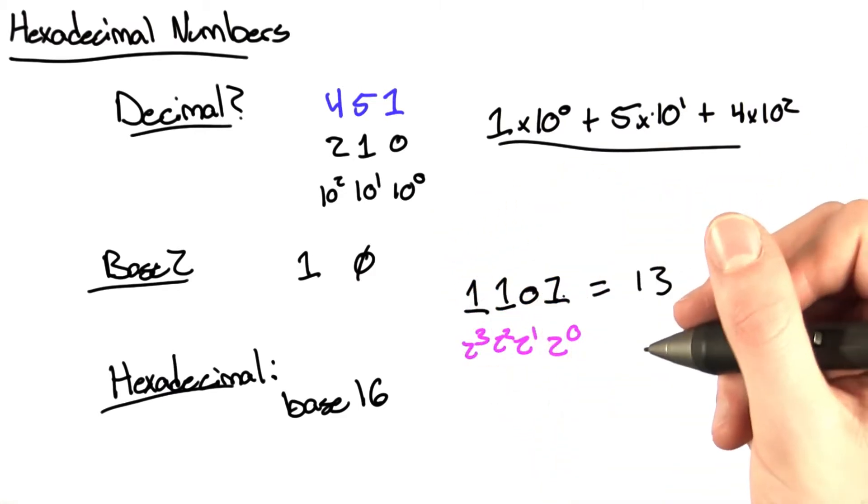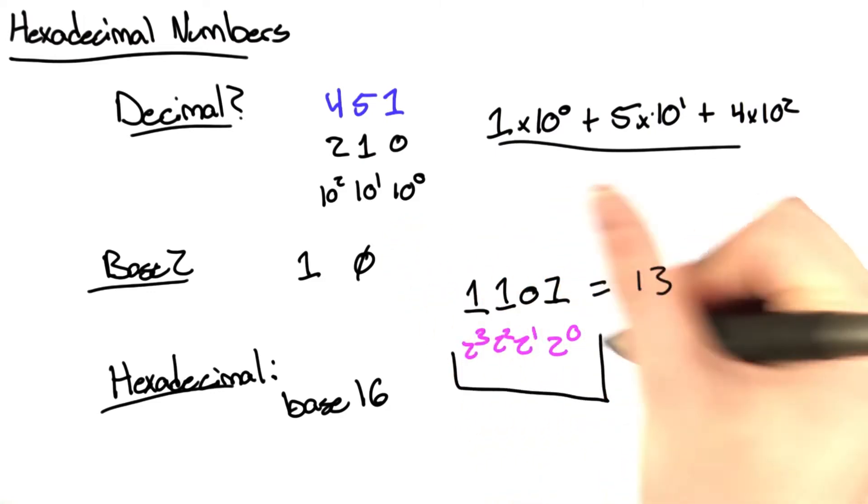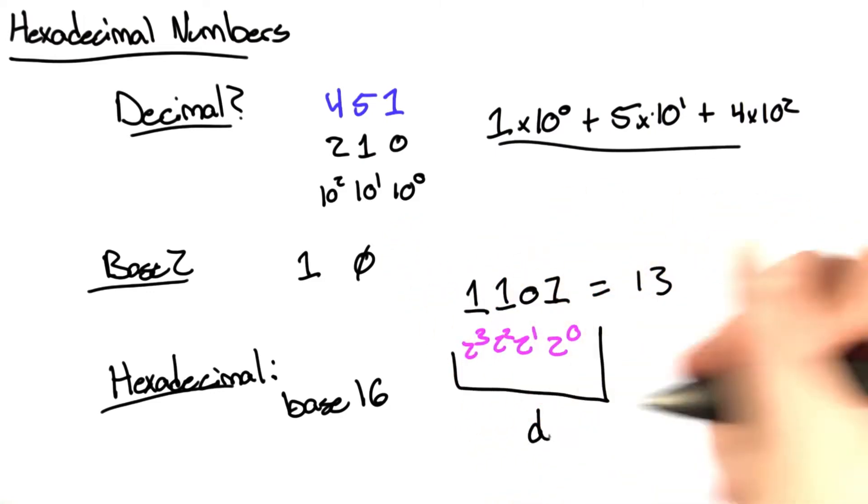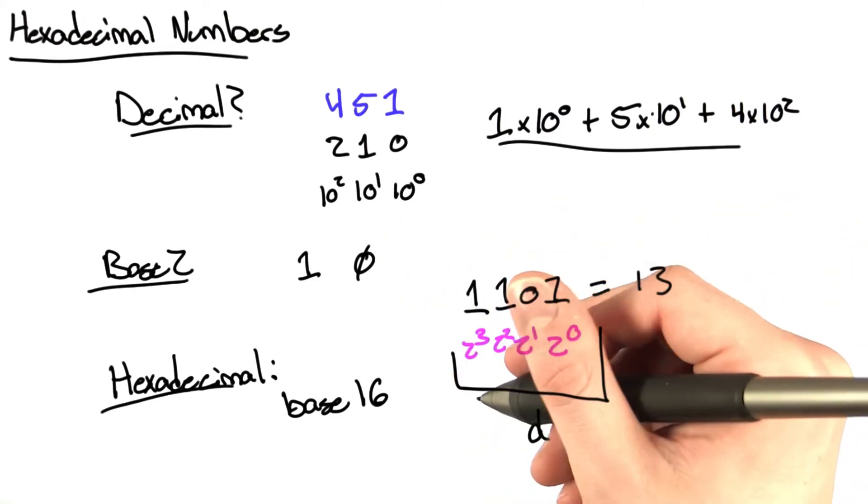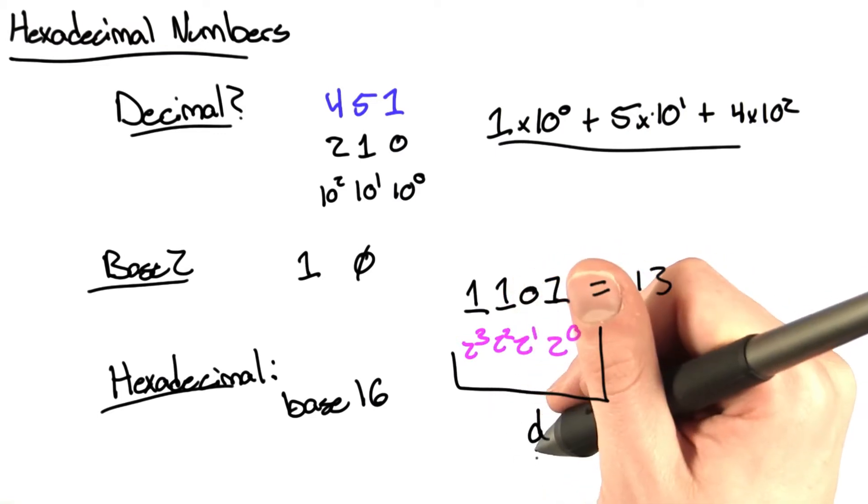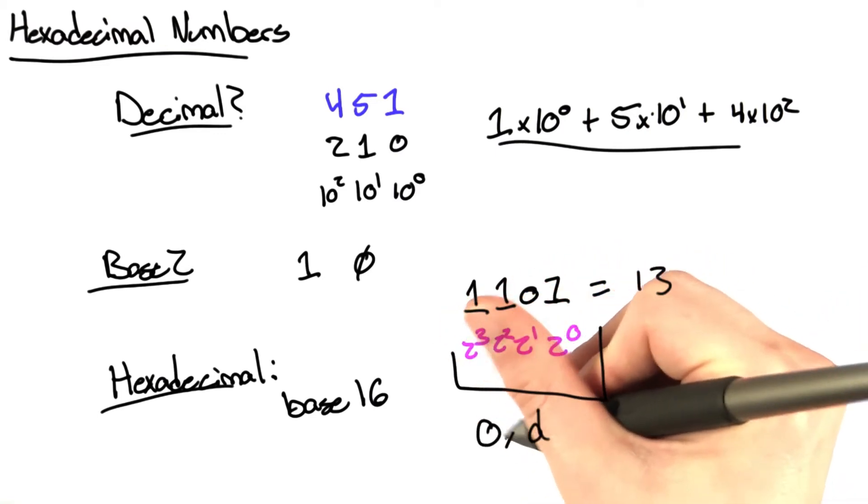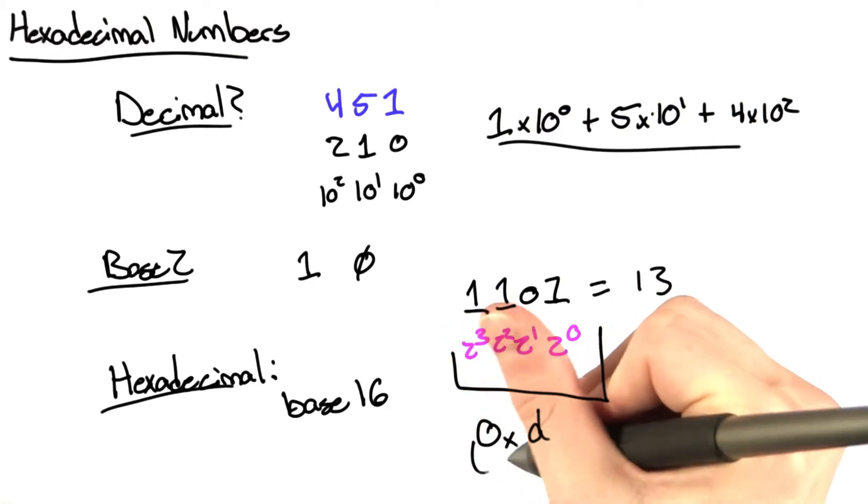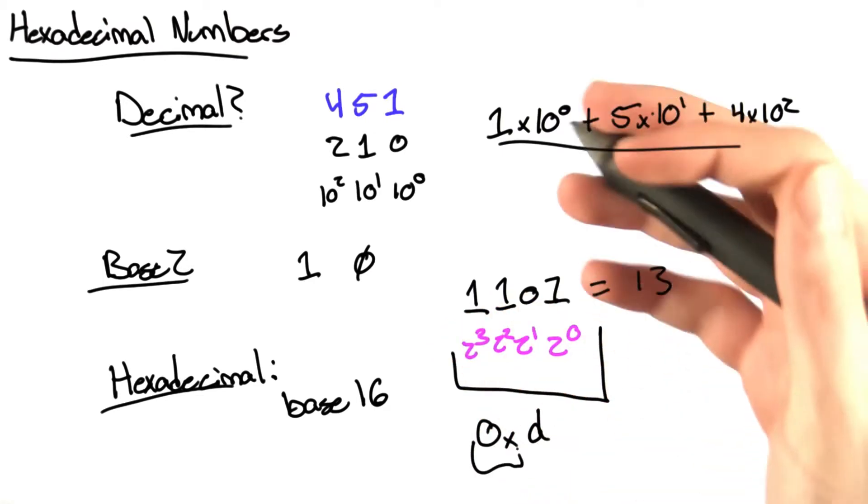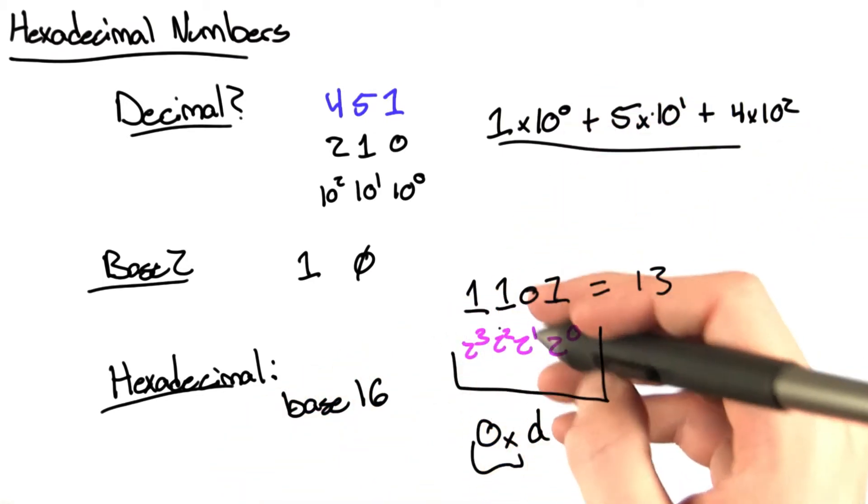So 1, 1, 0, 1, I can write that with 1 hexadecimal number, which happens to be D. And convention dictates that whenever we write a hexadecimal number, we're going to put a 0 and an x in front of it. The 0 and the x don't mean anything except that it's a hexadecimal number that follows.